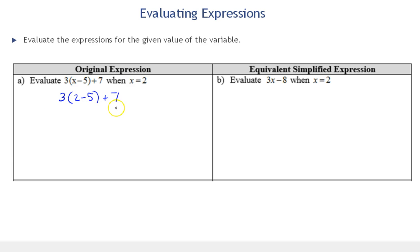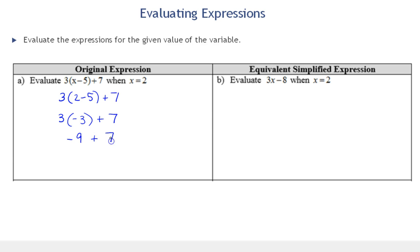So we have 3 times (2 minus 5) plus 7. Notice we have all numbers here — this is a problem you would see in arithmetic class. Following the order of operations, we do parentheses first. We can subtract: 2 minus 5 is negative 3. Now we have multiplication and addition; multiplication comes first. 3 times negative 3 is negative 9. Negative 9 plus 7 is negative 2.